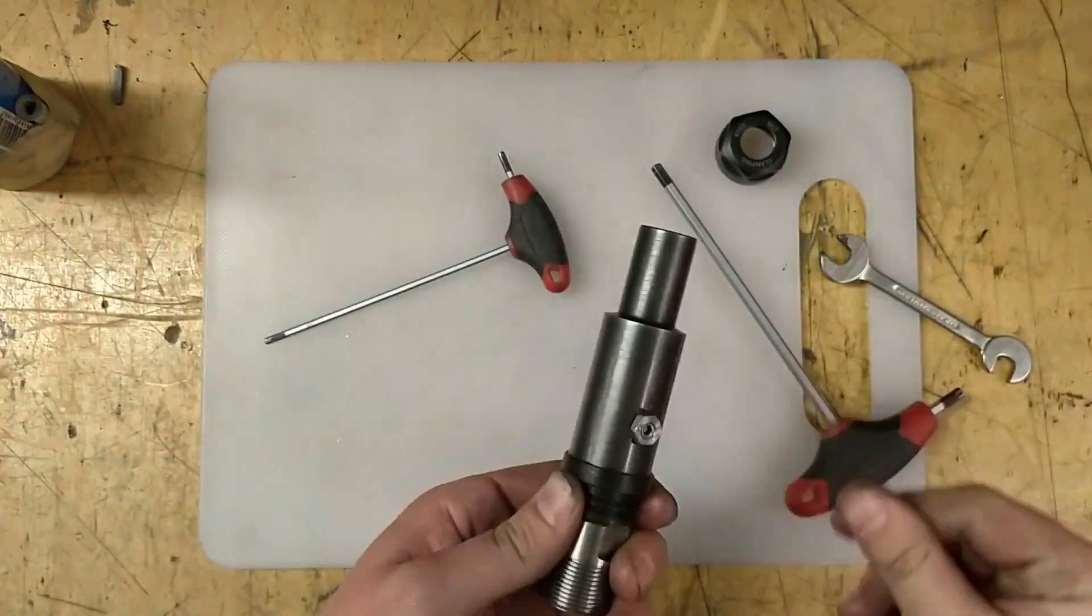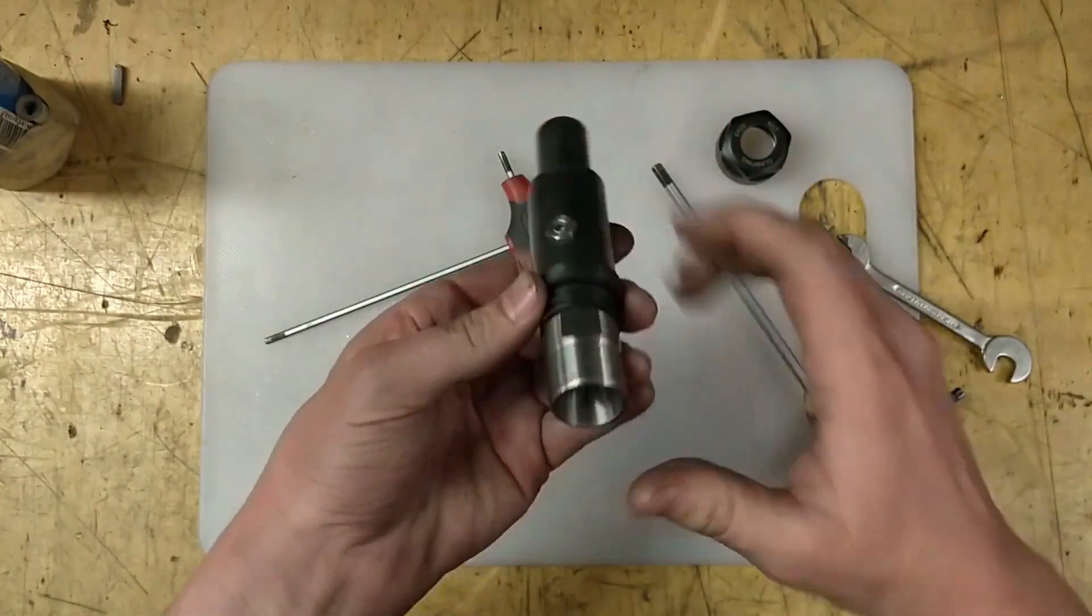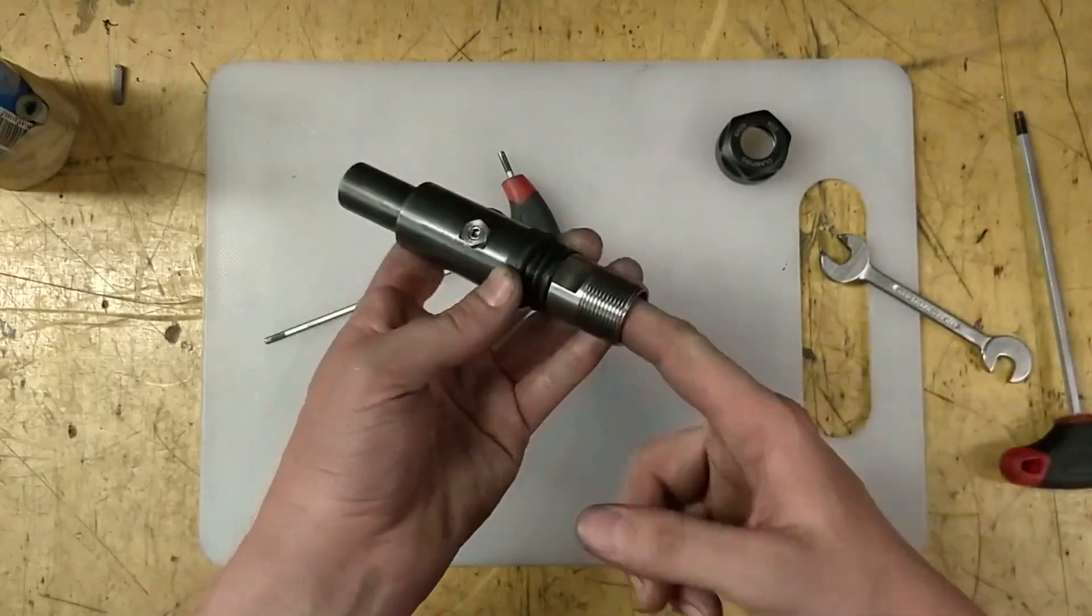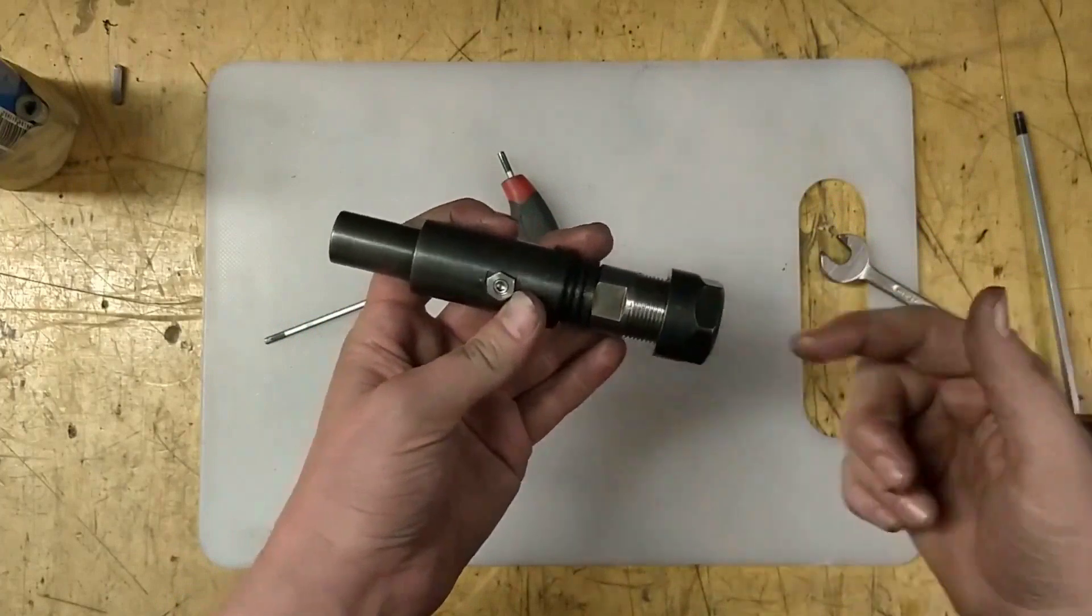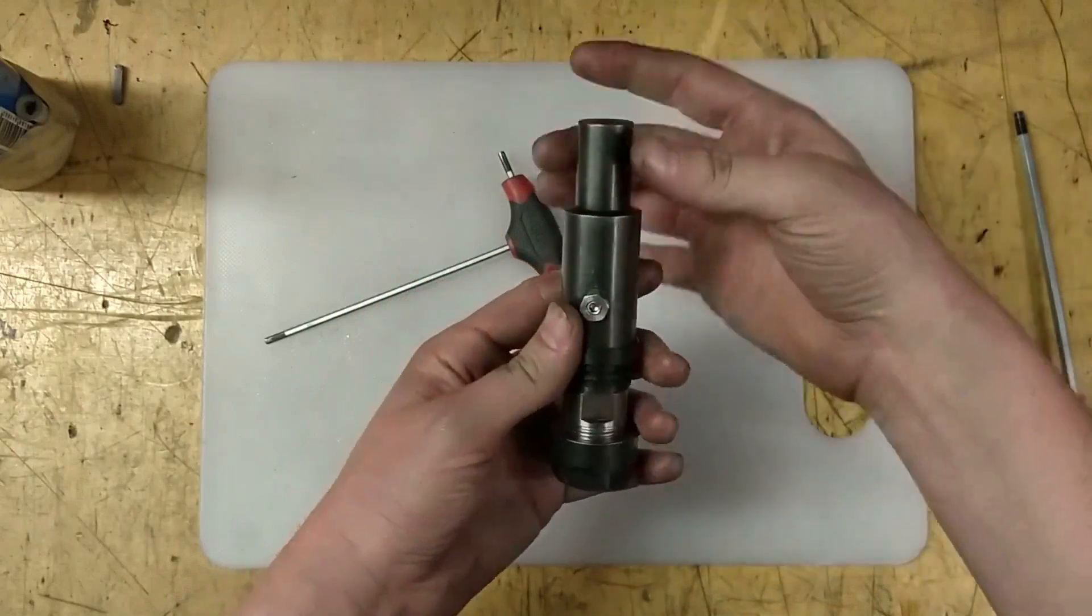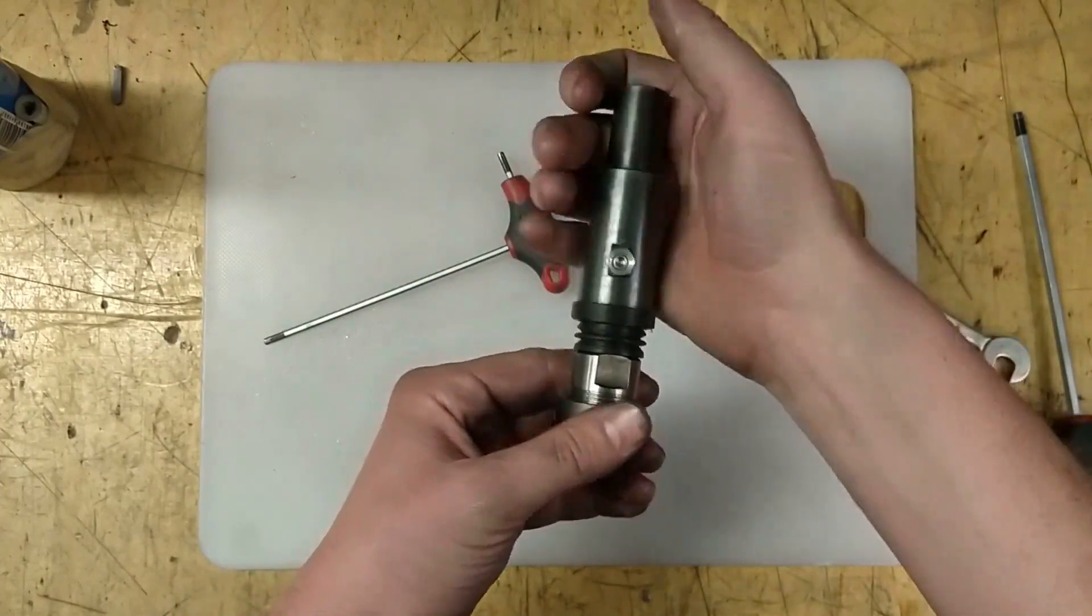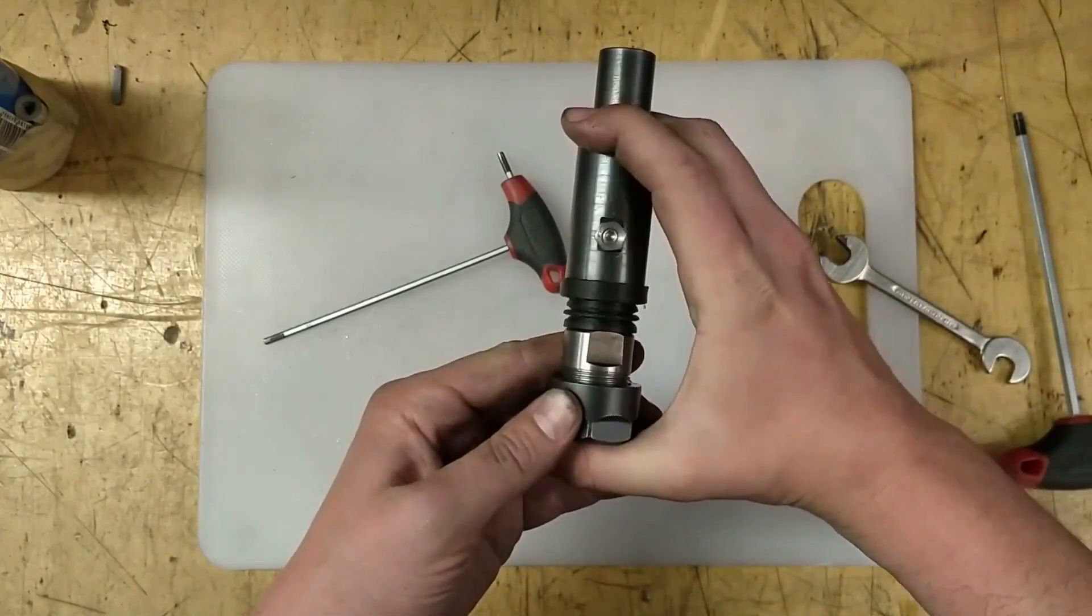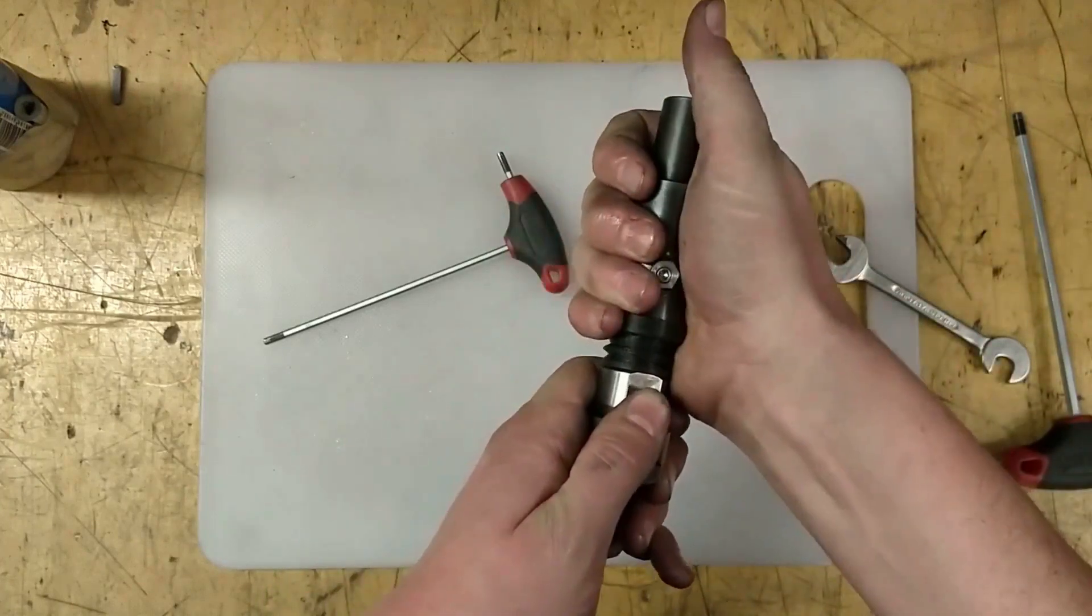And that's it. This is the tool holder. There will go the regular ER20 collet, put in the tap, tighten it down, put this end in the spindle, and it's locked radial but can move axial in both directions, so this way and also the way out.